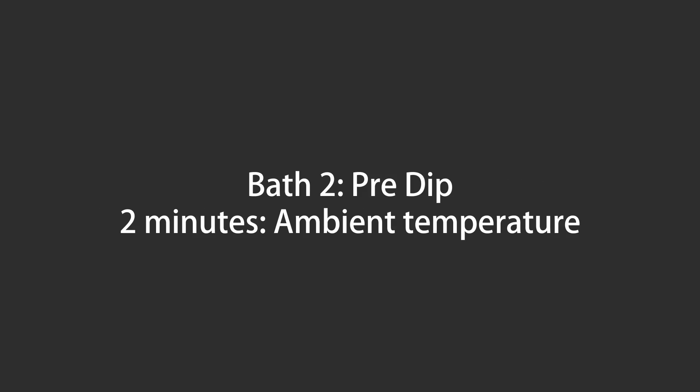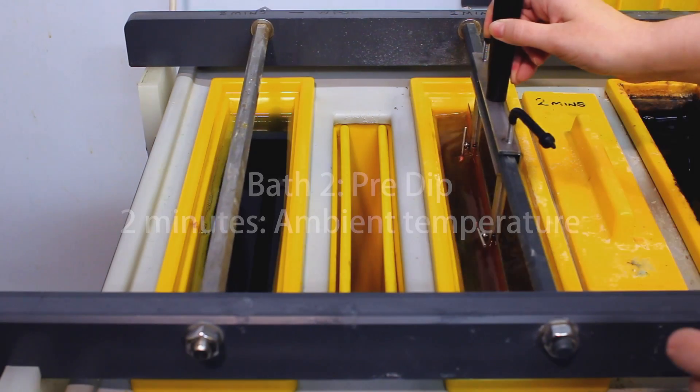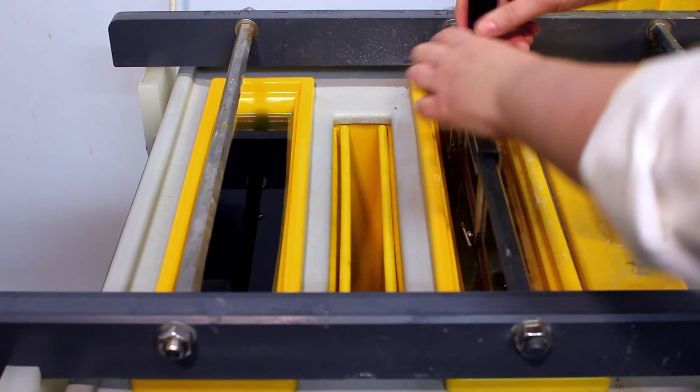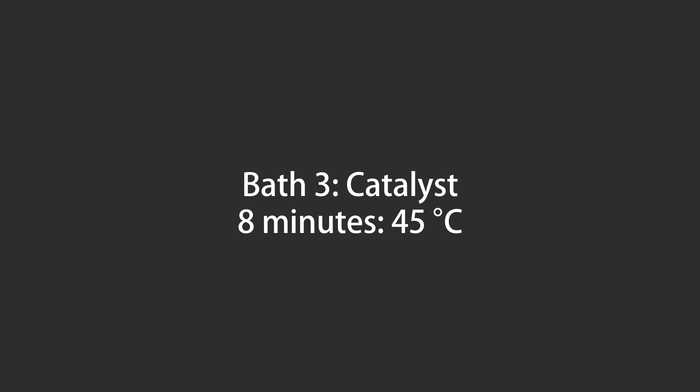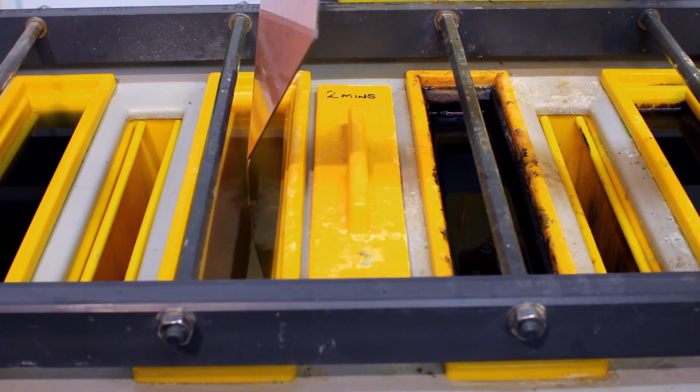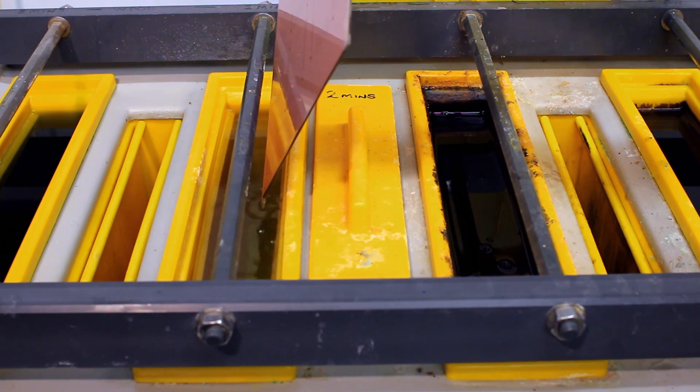The board is washed with water to prevent contamination of the next bath. After washing, the board is put in a bath of pre-dip which prepares the exposed fiberglass in the hole so that the catalyst will bond to it. The catalyst coats the holes with a colloid of palladium and tin.